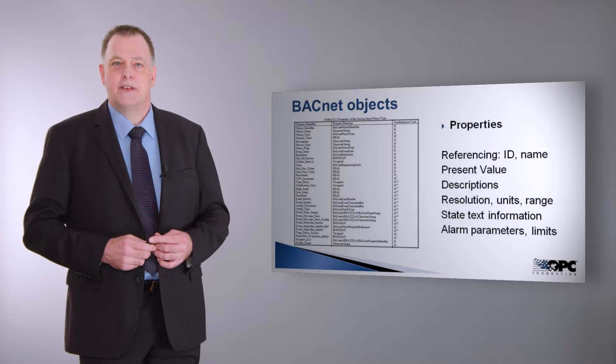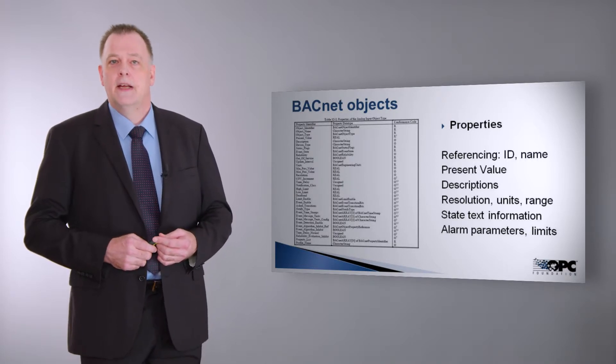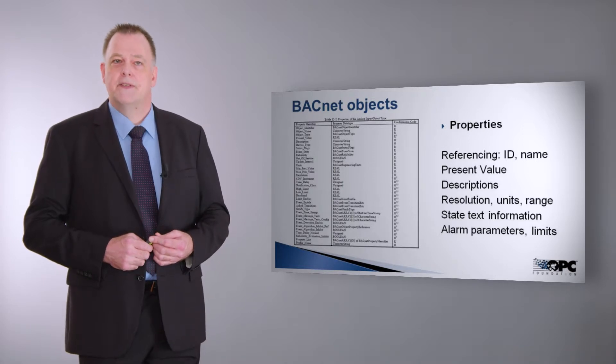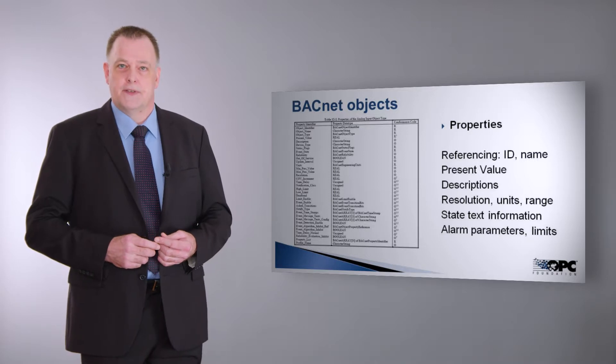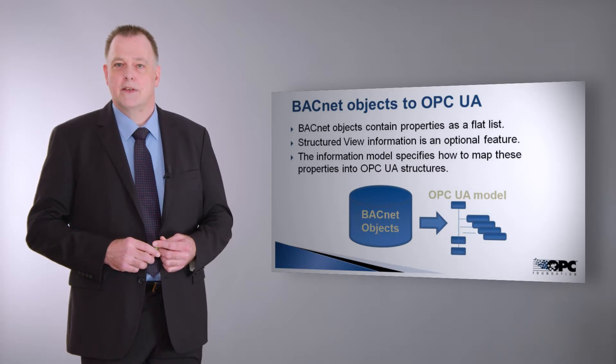In this picture we see a BACnet object — in this case an analog input object with its properties. On the right-hand side you find a short overview of which properties are presented from building automation. This includes the reference of the object, so the name and the ID, the present value which is most likely the most important information, but of course also information like the description text, the limits, the units, the range, and of course the alarm status of this object. In BACnet, devices objects are flat with no hierarchy information, even though there's an option called structured view which may be applied to BACnet devices to present the user hierarchy — the facility manager's view to the data points. In OPC UA we already have structured data types, so we can use this mapping to map structured data into the OPC UA structures.